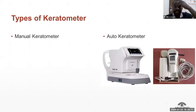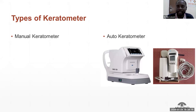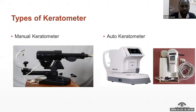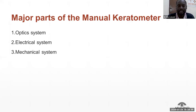Keratometers are in two categories: we have a manual keratometer and an auto keratometer. In this session, we focus on the manual keratometer. The manual keratometer has three major systems: optical, mechanical, and electrical.